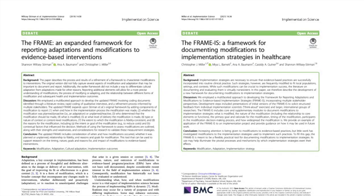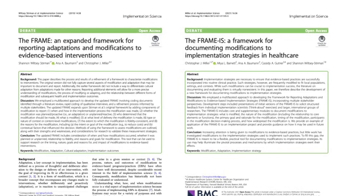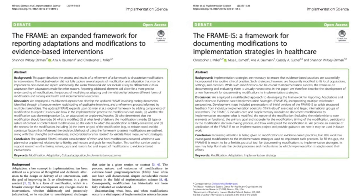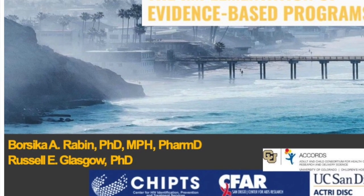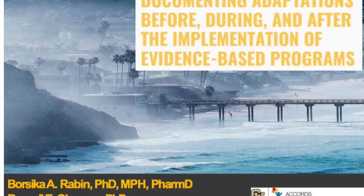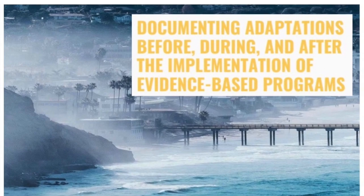My favorite answer is: it depends — it's the particular issue. Often we've had success in terms of thinking about adaptations using either the FRAME or the FRAME IS framework. Some work led by Borsica Robin has focused on explicitly integrating some of the RE-AIM dimensions with the FRAME notion to talk about who or what, when, and where an adaptation was made. Particularly the RE-AIM notions there are: one, what was the purpose — was it to increase reach or to increase consistency of implementation? And then also, what was the impact on the RE-AIM dimension? We do find that helpful.